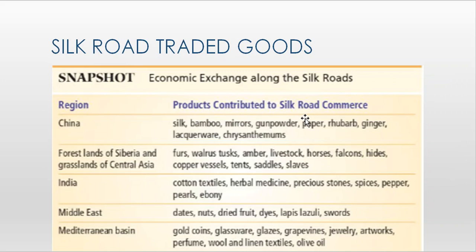Here are some Silk Road goods traded. We have goods from China, Siberia, Central Asia, India, the Middle East, and the Mediterranean. One important thing to remember is that the Silk Road primarily dealt in luxury goods.